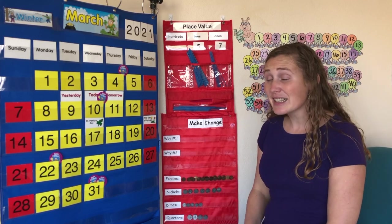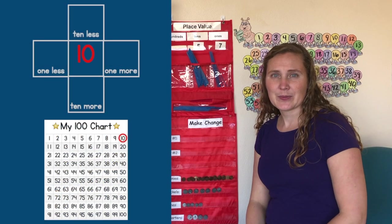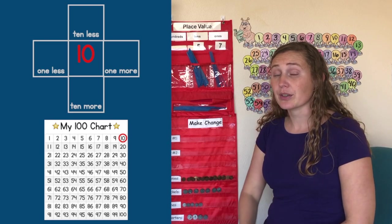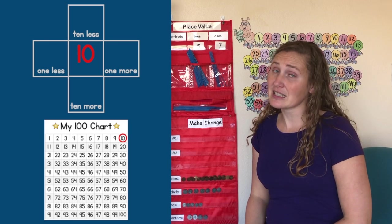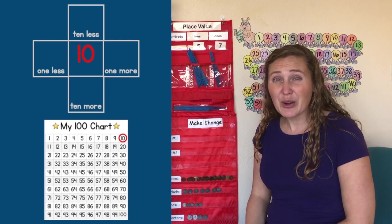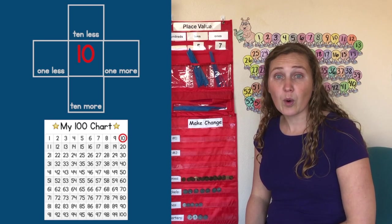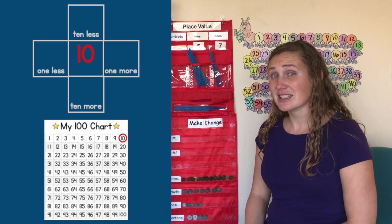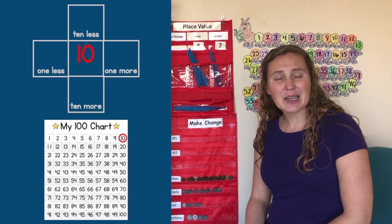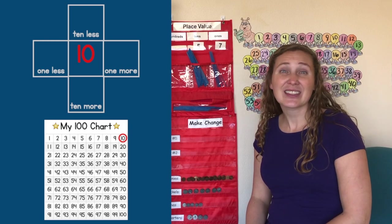Our number today is the number 10. It's the 10th day of March. Is 10 an odd or an even number? Remember, when we have a number that's two digits long, we look at the second digit and see if that number is odd or even. Then we know whether the two-digit number is odd or even. 10 is a 1 and a 0. Those are the two digits. The second digit, the second number is 0.